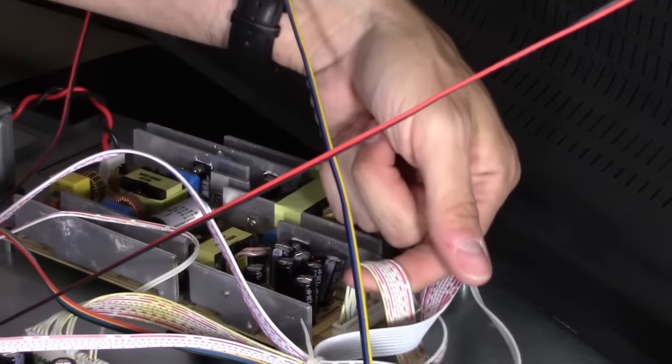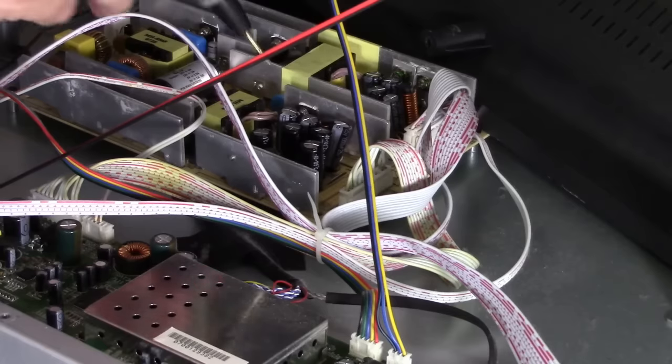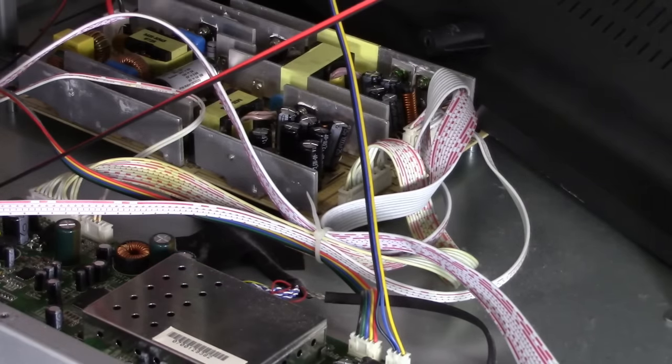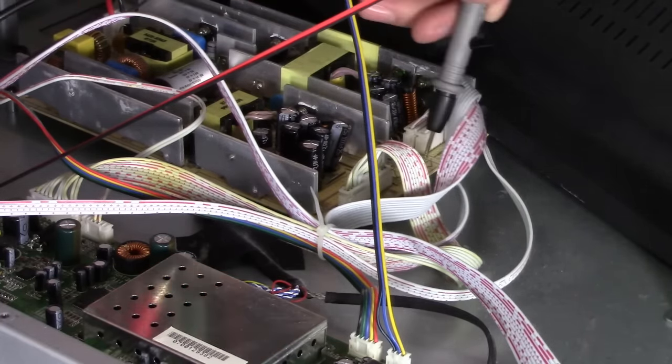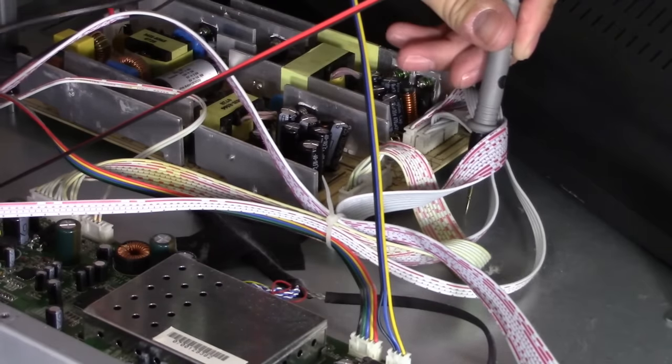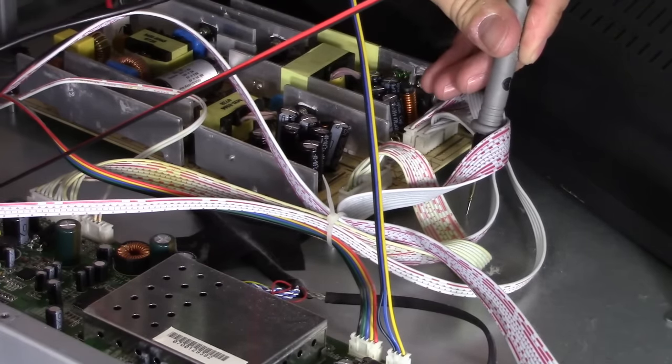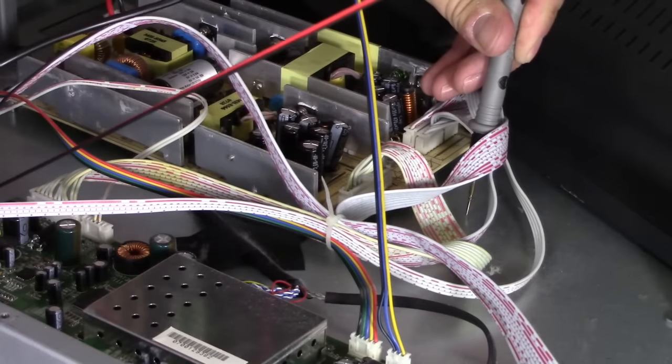So here is the cable going to the main logic board. I'm going to put my black lead on a ground source. And the metal plate should be a good ground source, like right here. That should be fine. And then my red lead, I'm going to put on the pins.